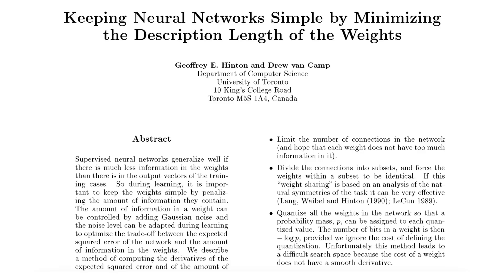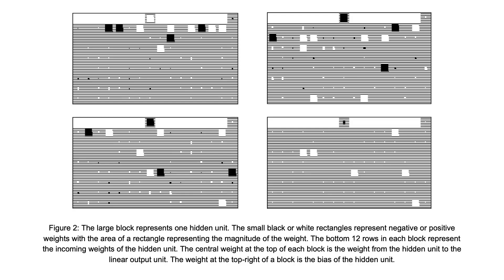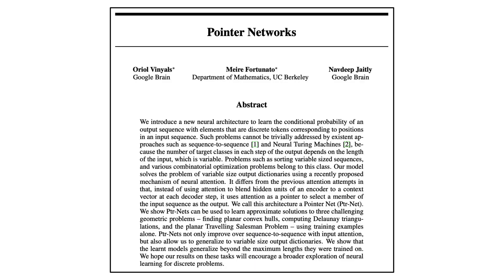The first item is a rather old paper, keeping neural networks simple by minimizing the description length of the weights, which was written in 1993 by Geoffrey Hinton. He says in this paper that supervised neural networks generalize well if there is much less information in the weights than there is in the output vectors. Thus, he proposes an algorithm that penalizes the amount of information contained in the weights by adding a learnable amount of Gaussian noise on the weights during training. If you find this topic interesting, definitely give this paper a go.